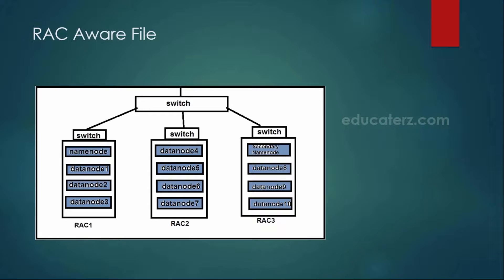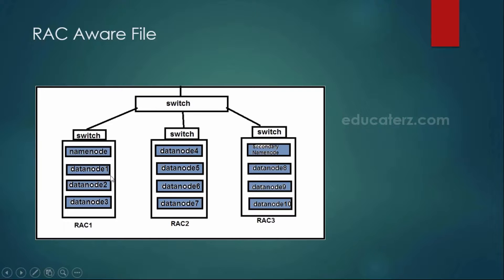Rack aware file. In production clusters, you will have a large number of slave machines which are multiple data nodes. These multiple data nodes get divided into racks — all your machines are divided into racks. Rack 1 consists of some machines, rack 2 consists of some machines, and similarly rack 3 as well. If data node 1 wants to interact with data node 2 within the same rack, a local switch is used. If data node 1 wants to interact with data node 4 in a different rack, a different switch is used for communication.